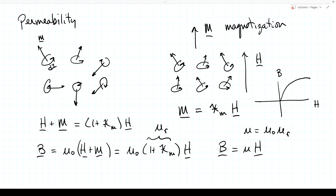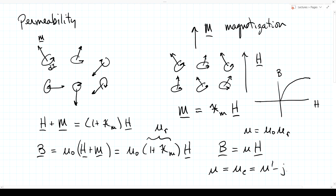It's harder to model frequency dependence for permeability, but with a time-varying magnetic field the dipoles must flip back and forth, creating frictional effects and collisions between atoms. In general, mu also becomes a complex function of frequency: mu prime minus j mu double-prime, where the imaginary part corresponds to loss mechanisms.